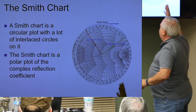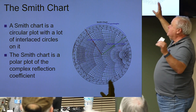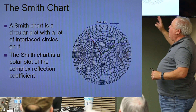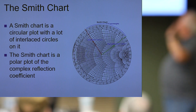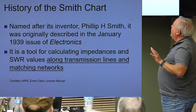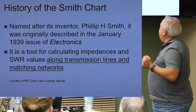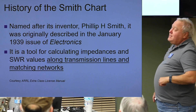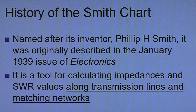A Smith Chart is circular, obviously. It has a lot of interlaced lines and circles. It's basically a polar plot of complex reflection coefficient — not as bad as it sounds. It was named after Philip Smith Jr., and was originally described in 1939 in Electronics Magazine. It's basically a tool for calculating impedance and SWR — standing wave ratio values — along transmission lines and matching networks.